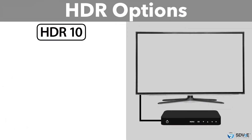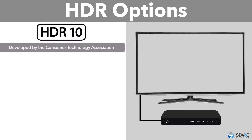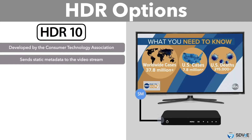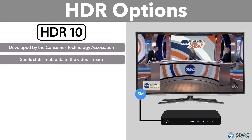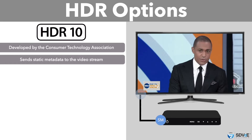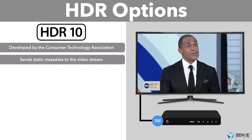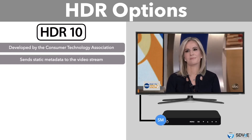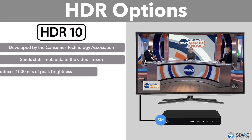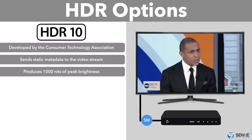HDR10 is a popular and simple HDR format developed by the Consumer Technology Association. The HDR10 standard sends static metadata to the display, enabling the display to calibrate its picture based on the overall characteristics of the video stream. HDR10 aims to produce around 1,000 nits of peak brightness.